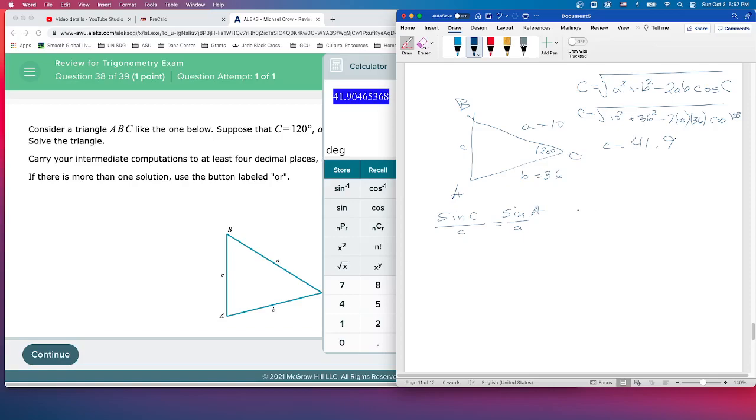So what does that give us? That gives us sine of 120 over 41.9 is equal to the sine of a over 10. Multiply both sides by 10. Just put that up here, 10 cancels. So sine of a is going to be equal to this.